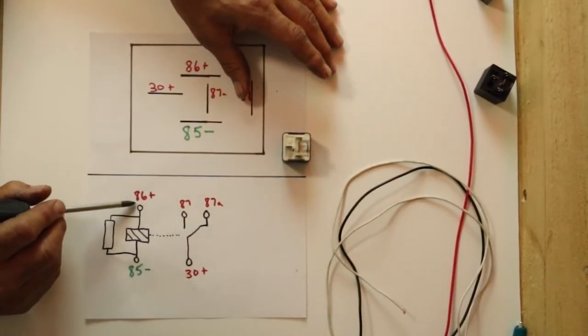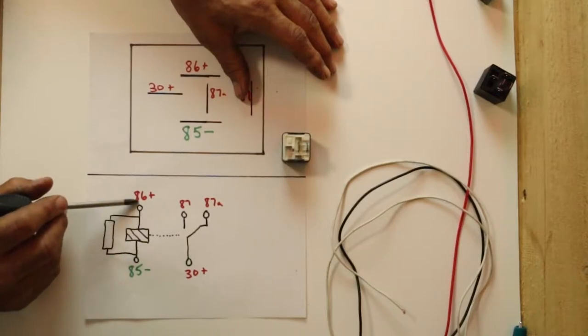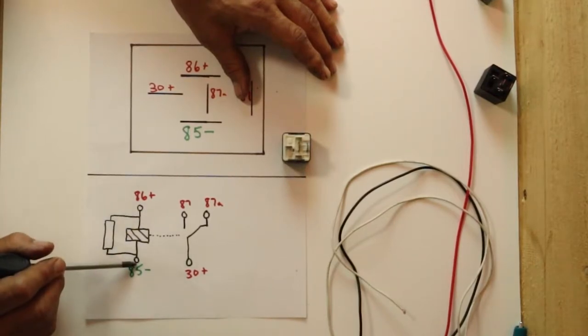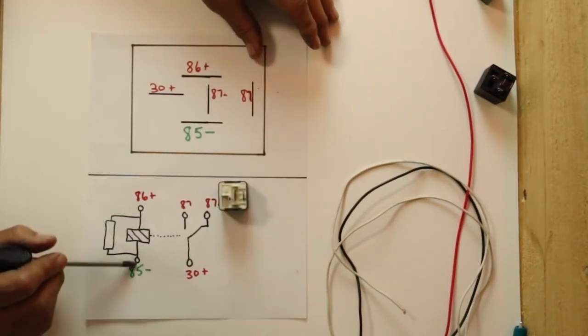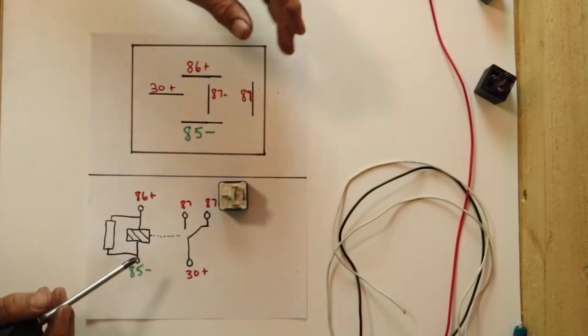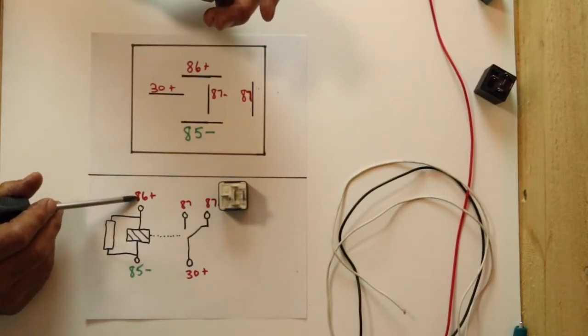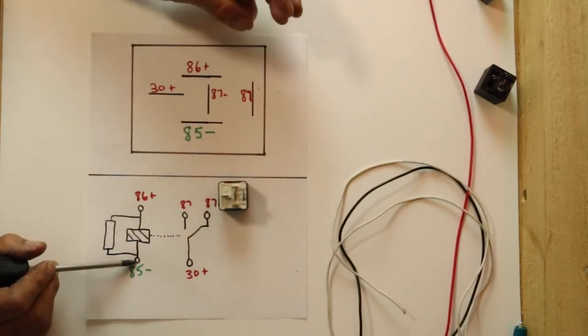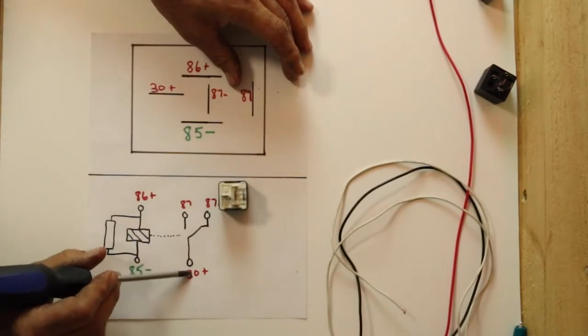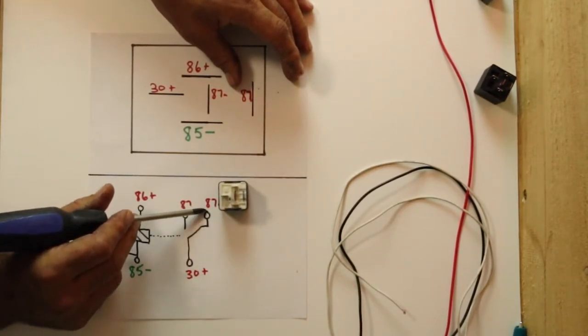Now, when you're bench testing it, it doesn't matter what side you put the hot on or what side you put the ground on. It should click and activate either way. But plugging into the car, 86 is always going to be hot. 85 will be your ground. 30 is going to be your hot. And again, 87 is going to supply.